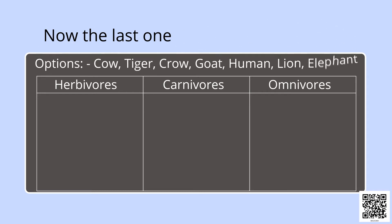Now the last one. We have three boxes here. We have to put names of the animals in the boxes meant for them. First box is for herbivores, second box is for carnivores, and the third box is for omnivores. And we have the options: cow, tiger, crow, goat, human, lion, elephant. Now, the first option, cow. It will go into the first box, that is for the herbivores. Tiger, where will it go? It will go into the second box.